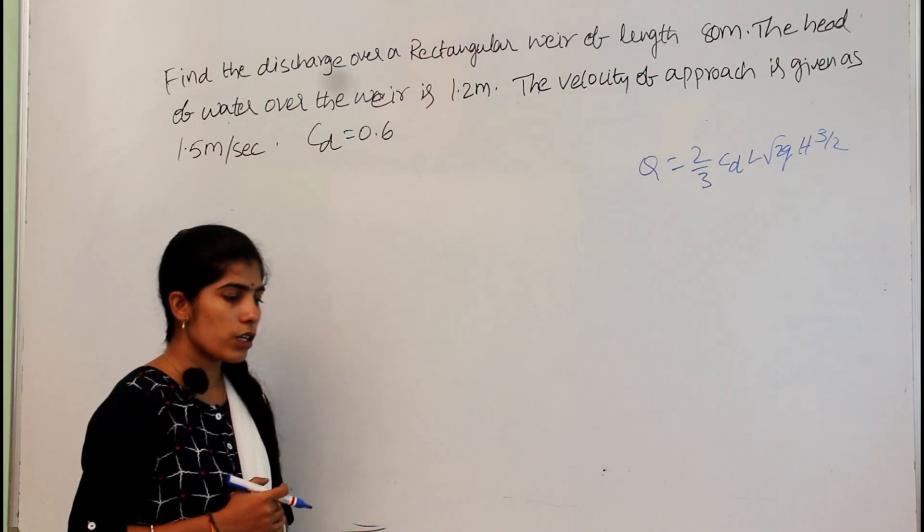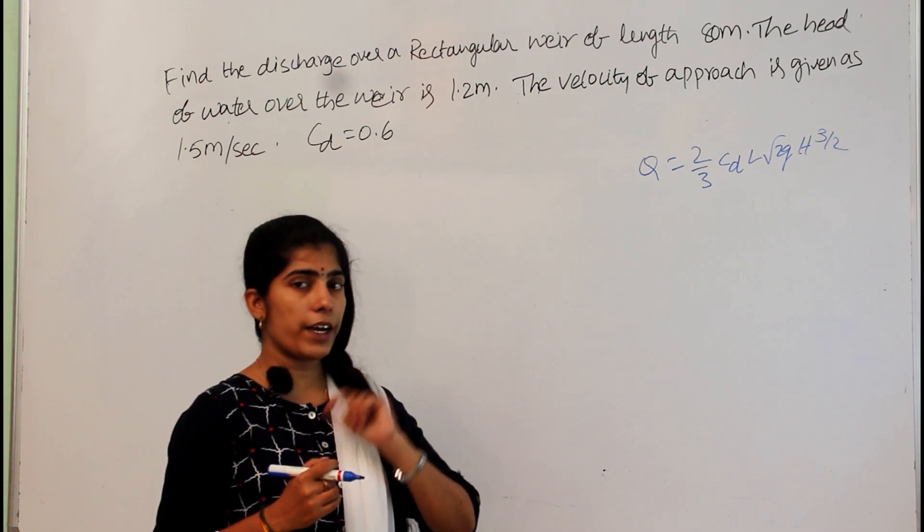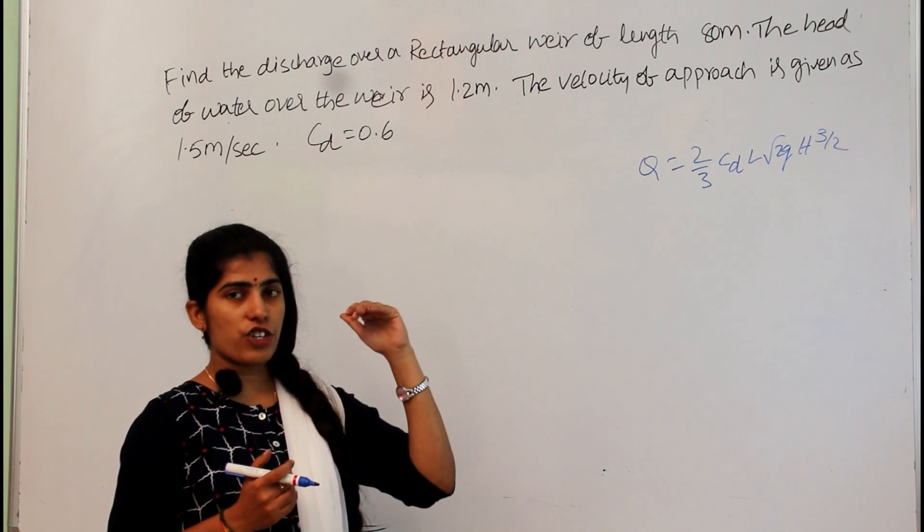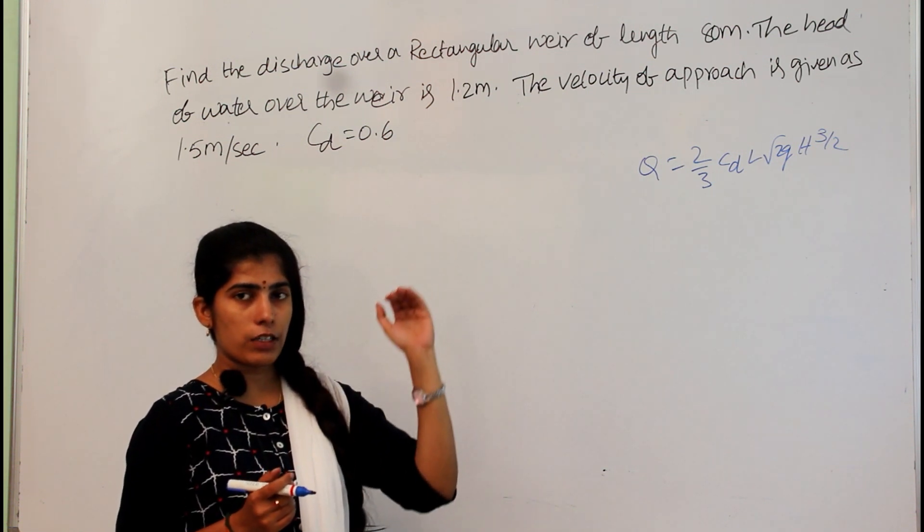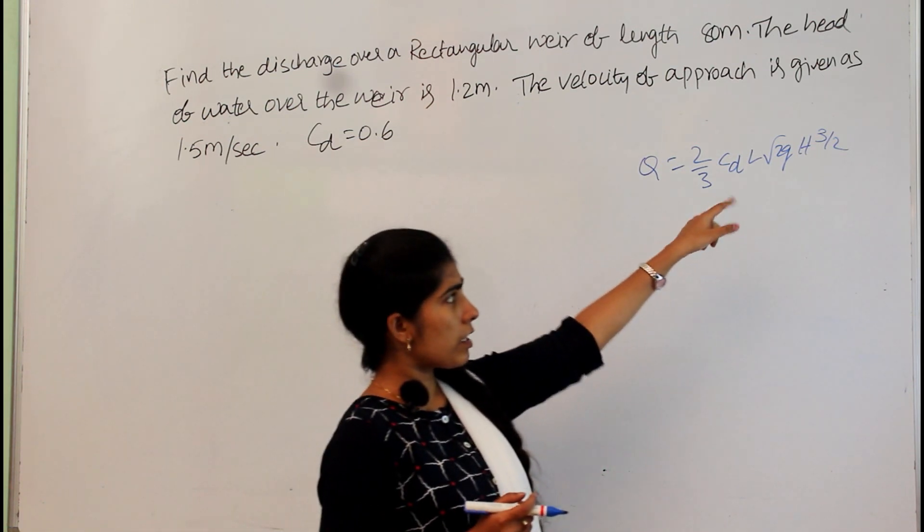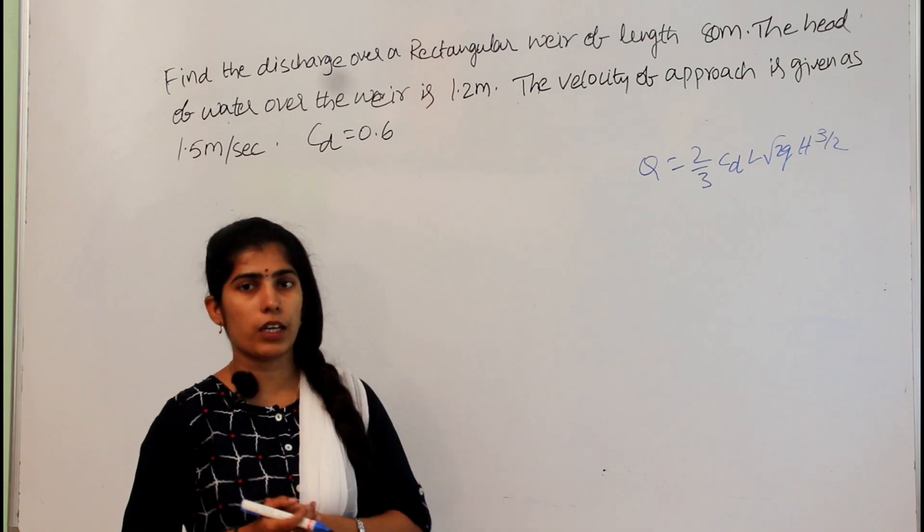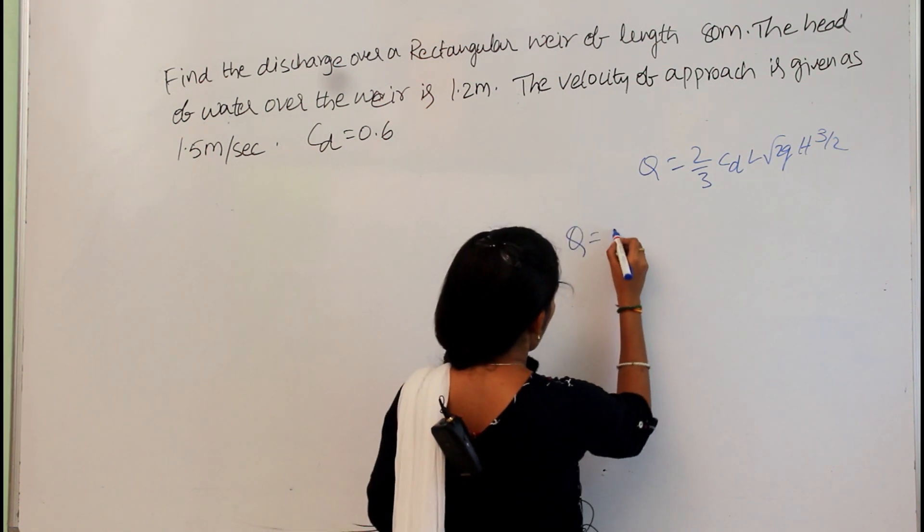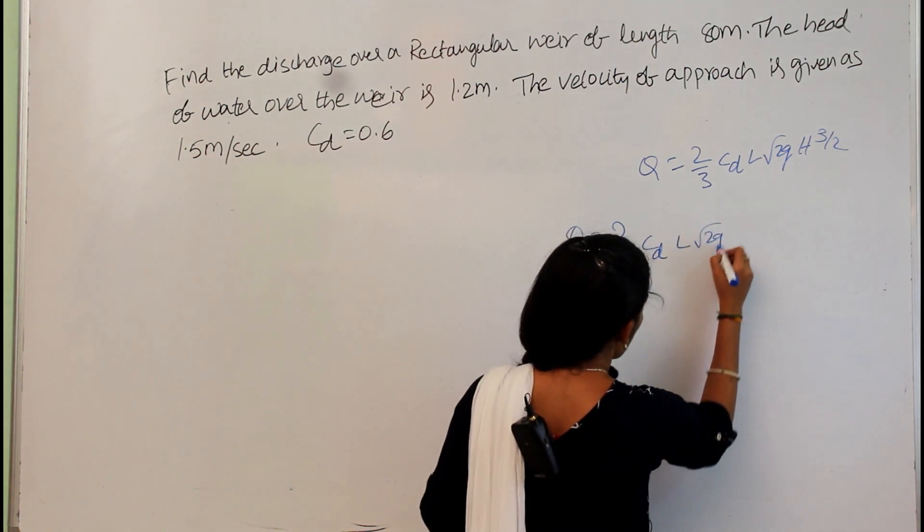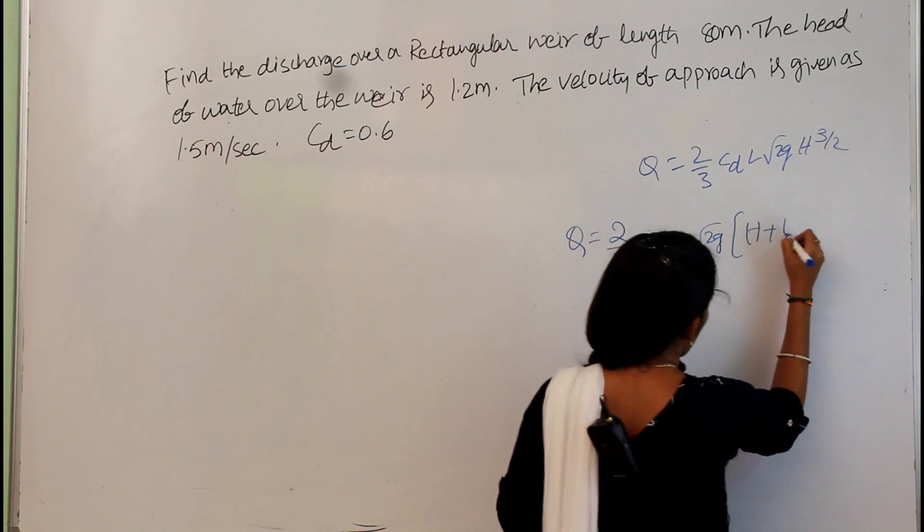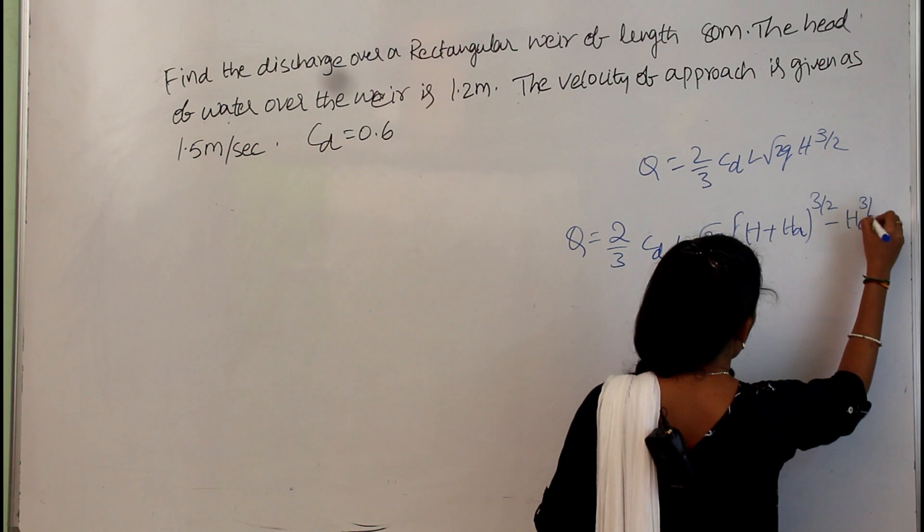But sometimes they also give the velocity approach. In those cases, some additional head of water will be present over the liquid surface. In this equation, along with the h, that additional head also we have to take. Then the discharge equation is modified as q equal to 2/3 cdl root 2g h plus ha whole power 3/2 minus ha power 3/2.